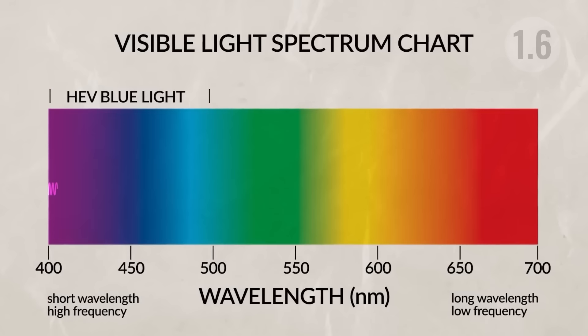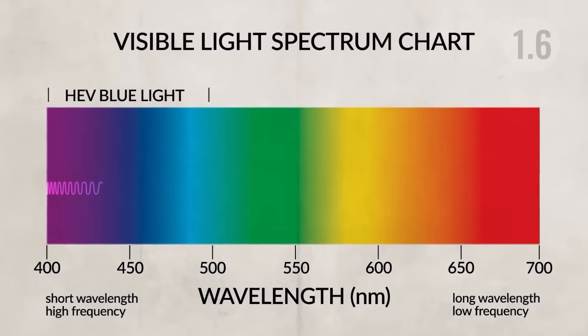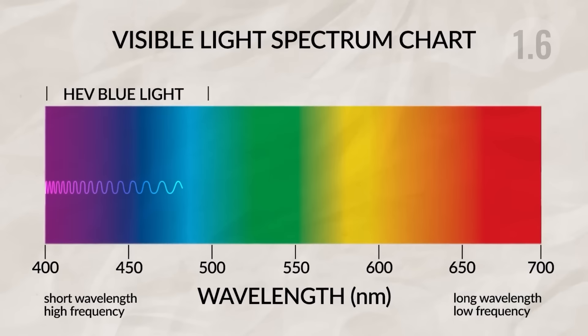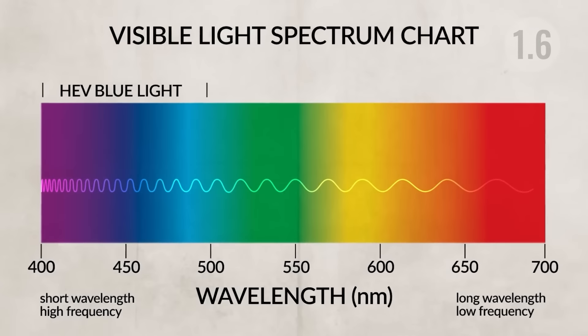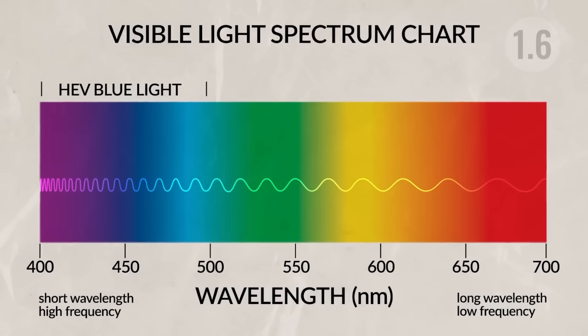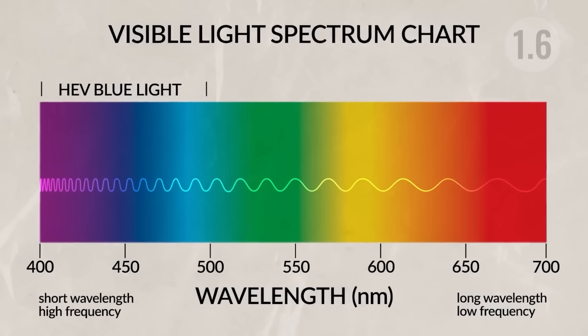Speaking of color, we need to talk about wavelength and amplitude. Cooler colors have shorter wavelengths and warmer colors have longer wavelengths, while the amplitude of the wavelength determines the brightness of the color. Blue has short wavelengths, green has medium wavelengths, and red has longer wavelengths. Short wavelength means high frequency and cooler colors; long wavelength means low frequency and warmer colors. Greater amplitude means brighter colors, while smaller amplitude means duller colors.